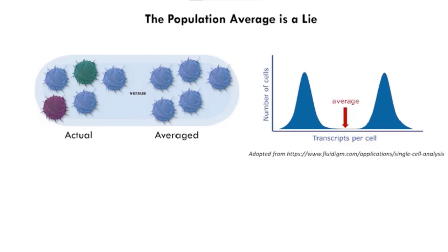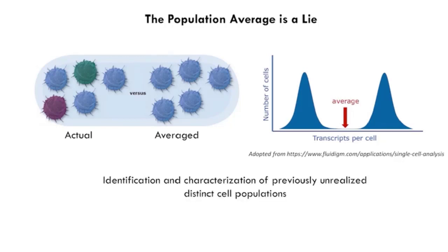One limiting factor in the past was that a lot of previous knowledge was generated using bulk-level analysis tools — Western blot, QPCR, or bulk RNA sequencing — done on tens of thousands, if not millions of cells. The problem here is that the population average can be a lie, in the sense that underlying cell states in a subset of cell populations get averaged out. In an extreme example, if half the population expresses gene X at a very low level and the other half at a very high level, the averaged readout couldn't be further from the truth.